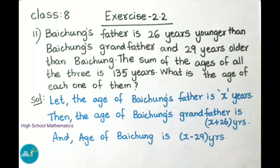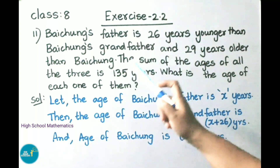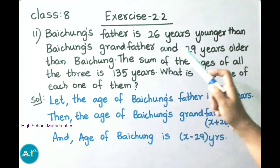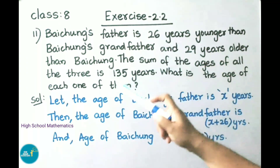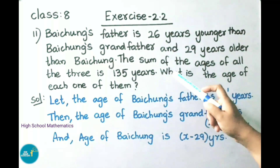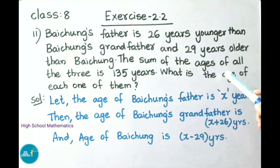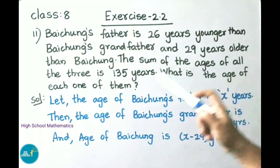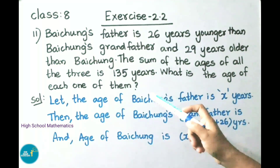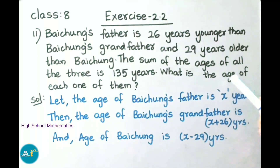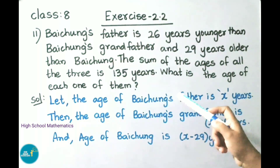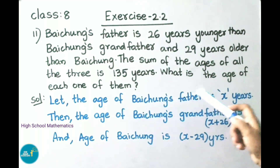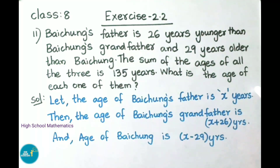See now question number 11. Bai Chung's father is 26 years younger than Bai Chung's grandfather and 29 years older than Bai Chung. The sum of the ages of all three is 135 years. What is the age of each one of them?